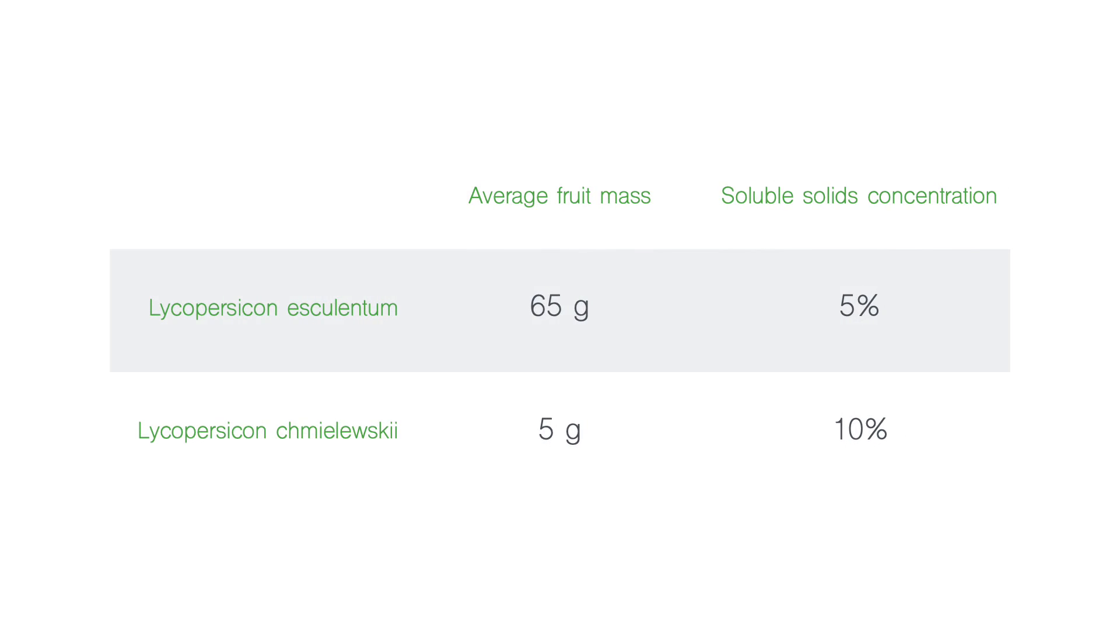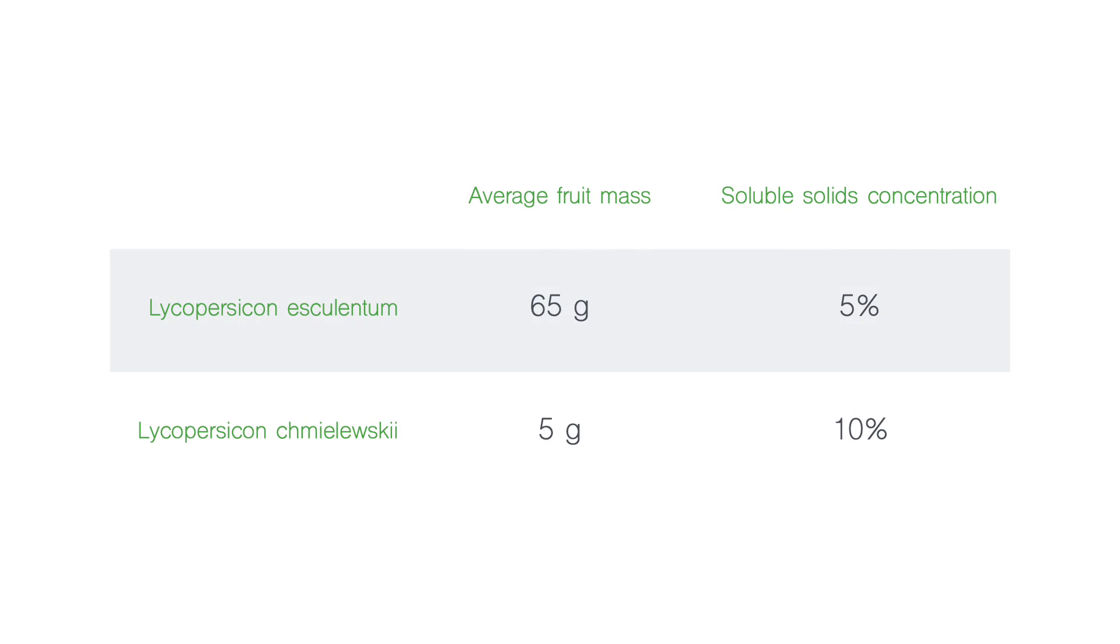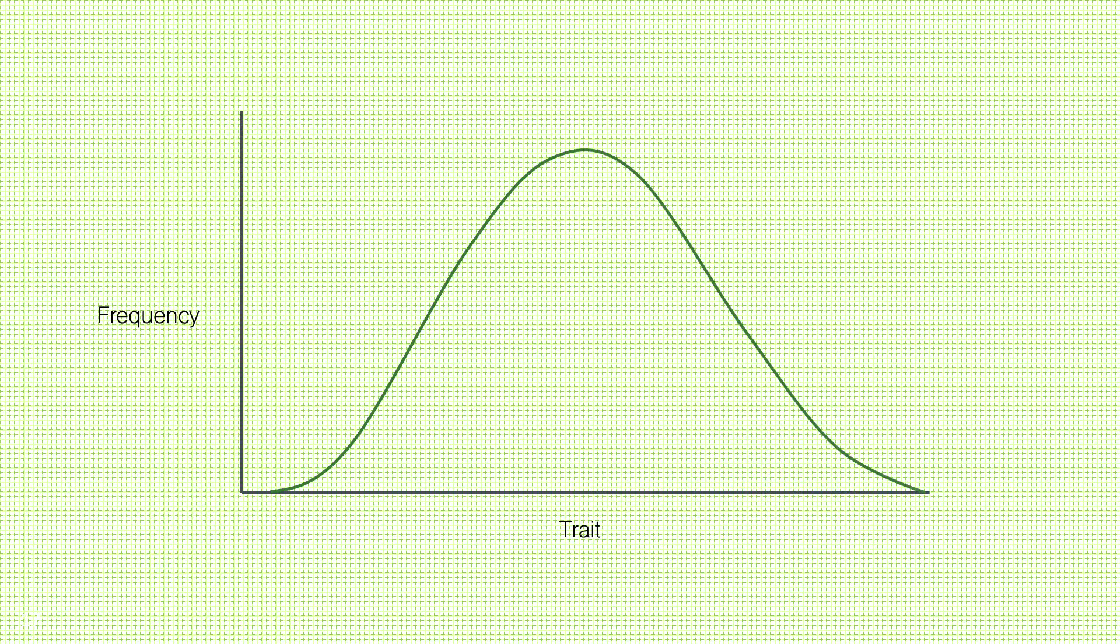The scientists crossed the domestic tomato Lycopersicon esculentum and a wild South American tomato Lycopersicon chmielewskii, growing 237 backcross plants in total. Domestic tomatoes have an average fruit mass of 65 grams and a 5% concentration of soluble solids. Wild tomatoes have an average fruit mass of 5 grams and a 10% concentration of soluble solids. These differences meant that the backcross plants showed continuous variation.